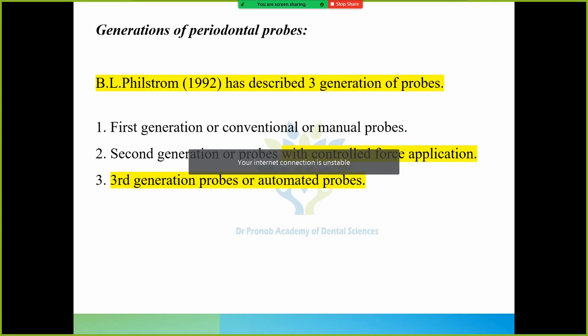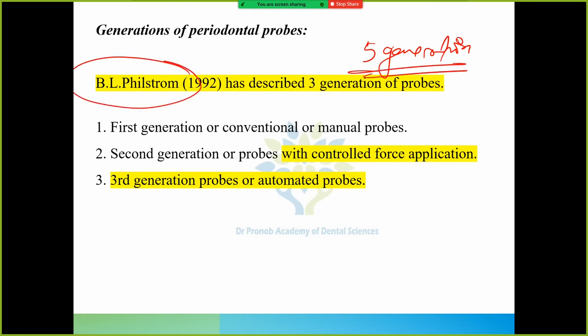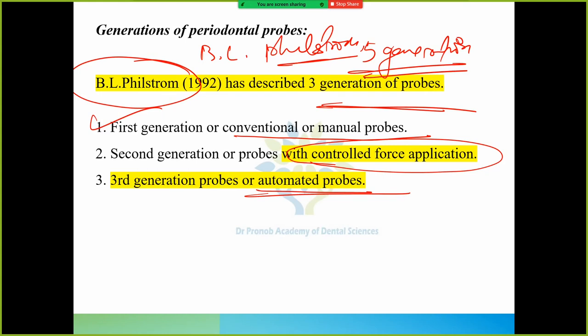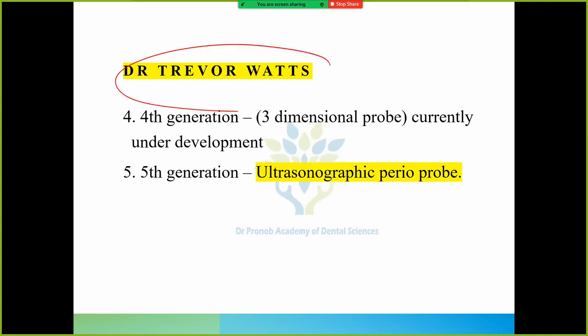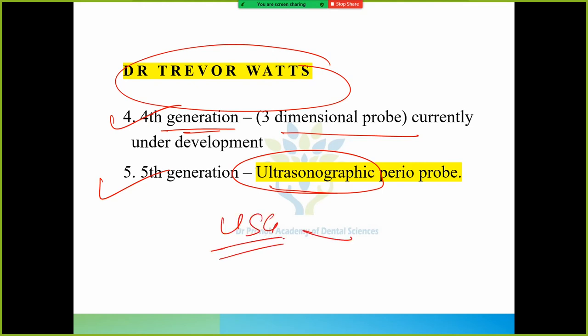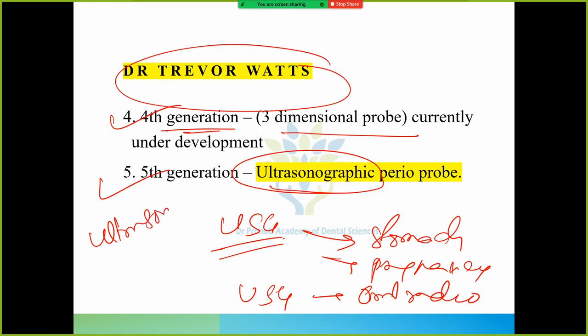Generations of periodontal probes: There are 5 generations of periodontal probes. Three generations were given by B.L. Pihlstrom. First generation are known as conventional or manual probes. Second generation has controlled force application. Third generation probe are automated probes. Then Dr. Trevor Watts gave the 4th generation and 5th generation. Fourth generation is 3-dimensional probe and it is under development. Fifth generation is ultrasonographic pedioprobe. We do ultrasonography in pregnancy, stomach-related cases, but we also do ultrasonography in oral radiology. Similarly, ultrasonography periodontal probes are there - this is 5th generation.